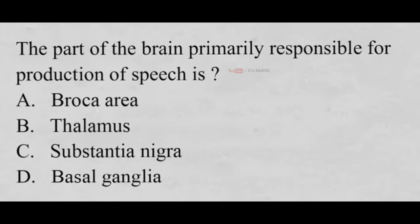The part of the brain primarily responsible for production of speech is: A. Broca's area, B. Thalamus, C. Substantia nigra, D. Basal ganglia. And the correct answer is A, Broca's area.